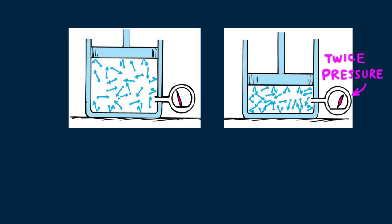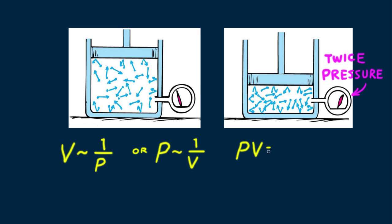Notice in these examples that pressure and volume are inversely proportional: V is one over P, or P is one over V. If you double one, you halve the other. We can write this as the product PV equals a constant.